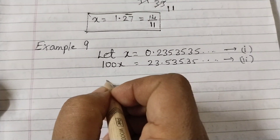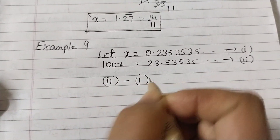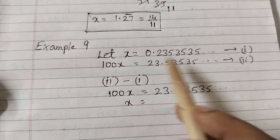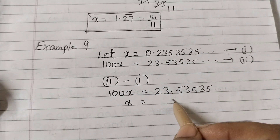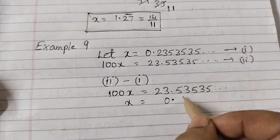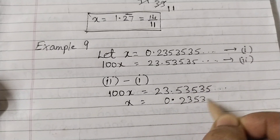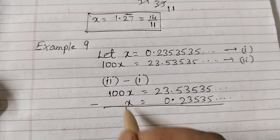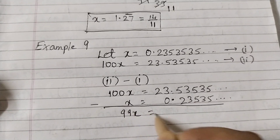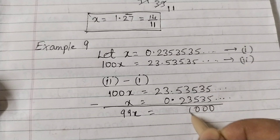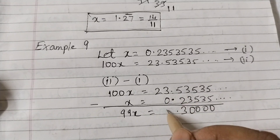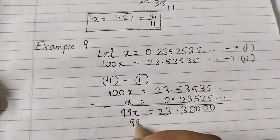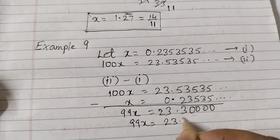Subtract equation one from equation two. Be careful — align the decimal points. Equation one is x = 0.2353535... placed with decimal point just below. Subtracting: 100x minus x is 99x. The repeating parts cancel: 23.5353... minus 0.2353... gives 23.3. So 99x = 23.3.